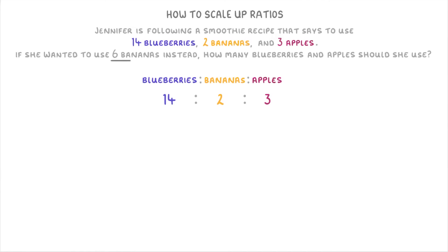Then because she wants to use 6 bananas rather than 2, we place a 6 beneath the 2. At this point it works just like all the other examples we've done, so because we have to scale up the 2 to a 6, we're going to have to multiply it by 3, which tells us that we're also going to multiply the apples and blueberries by 3 as well. Another way to think about this is that she needs 3 times as much of everything because she's basically making 3 times as much smoothie. So we'll do 14 times 3 to find out that she needs 42 blueberries, and 3 times 3 to find out that she needs 9 apples.